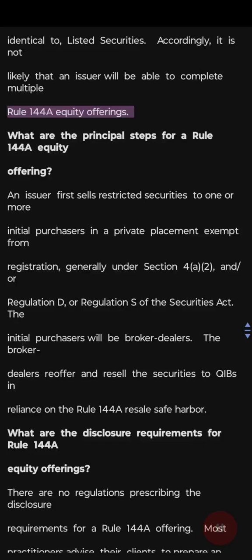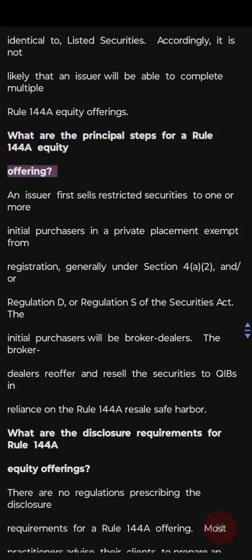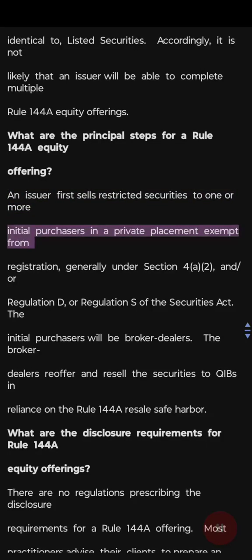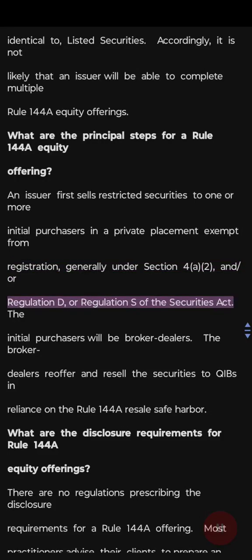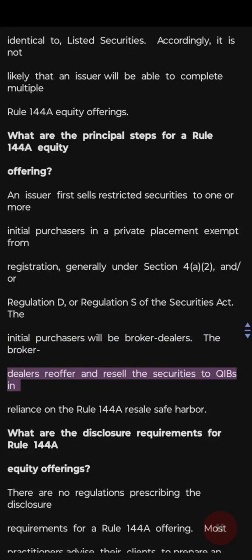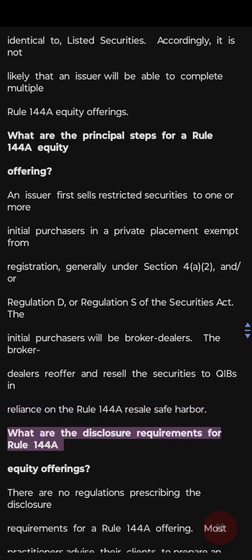What are the principal steps for a Rule 144a equity offering? An issuer first sells restricted securities to one or more initial purchasers in a private placement exempt from registration — generally under Section 4(a)(2) and/or Regulation D or Regulation S of the Securities Act. The initial purchasers will be broker-dealers. The broker-dealers reoffer and resell the securities to QIBs in reliance on the Rule 144a resale safe harbor.